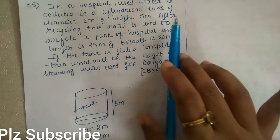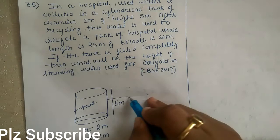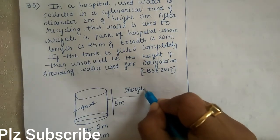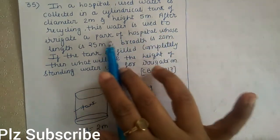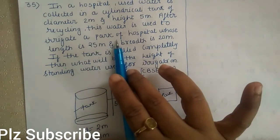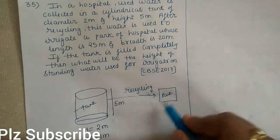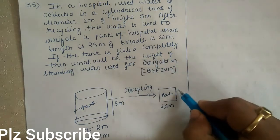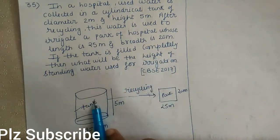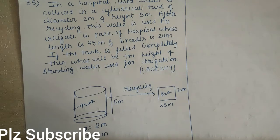After recycling, this used water is used to irrigate a park. The park has a length of 25 meter and a width of 20 meter. If the tank is filled completely, what will be the height of the standing water used for irrigation?